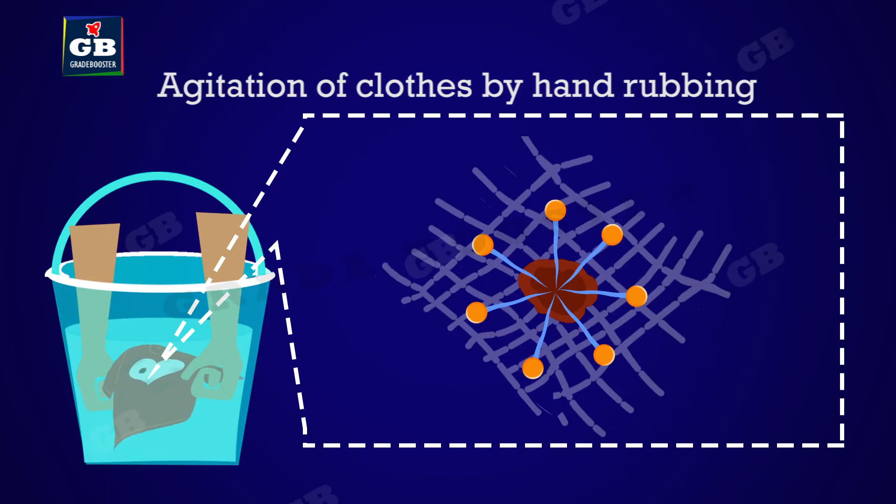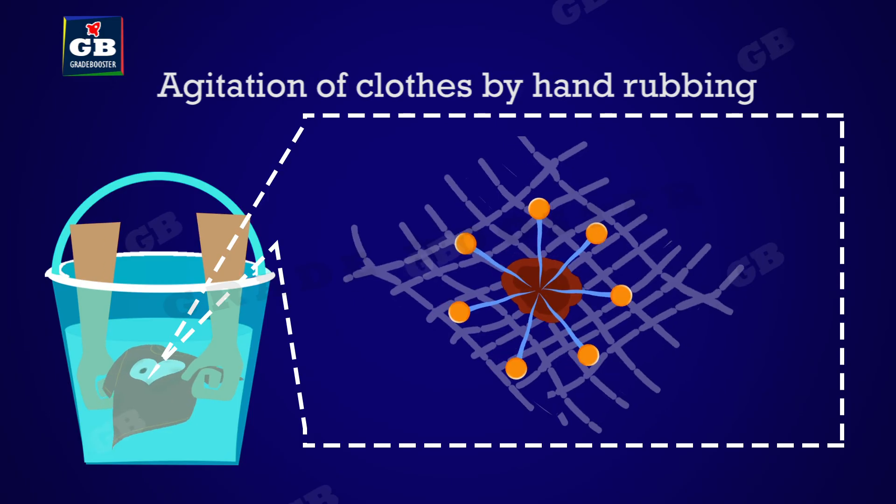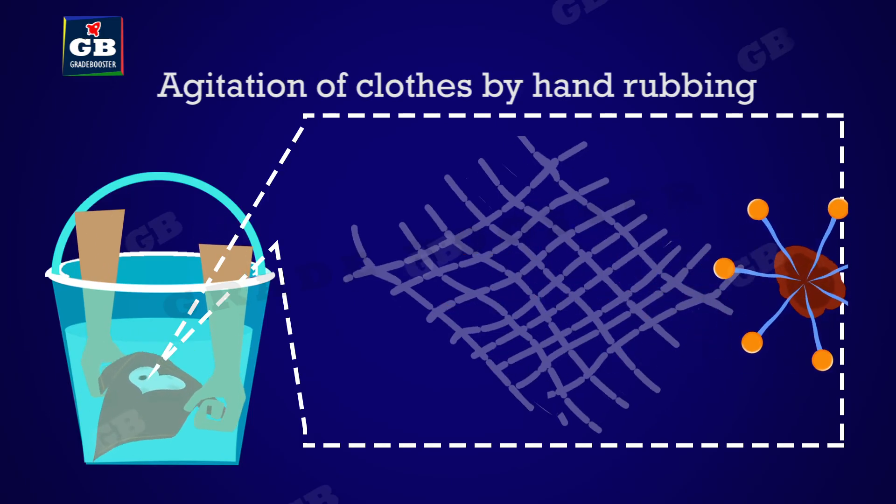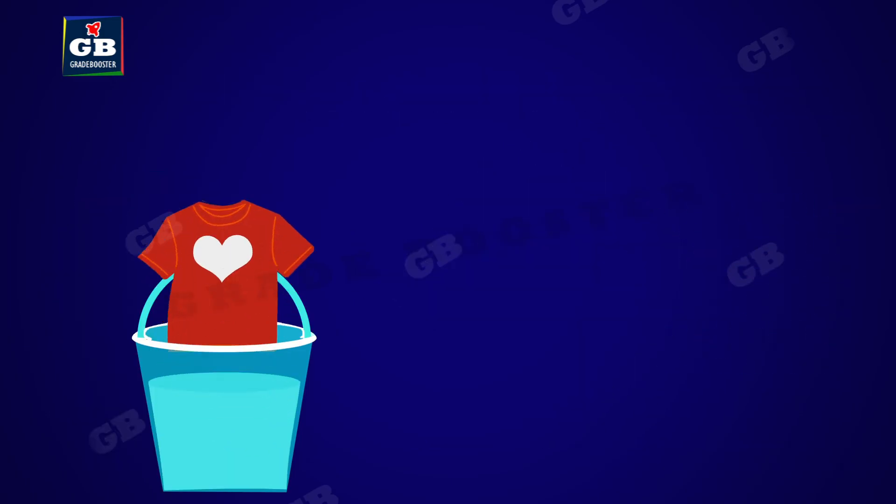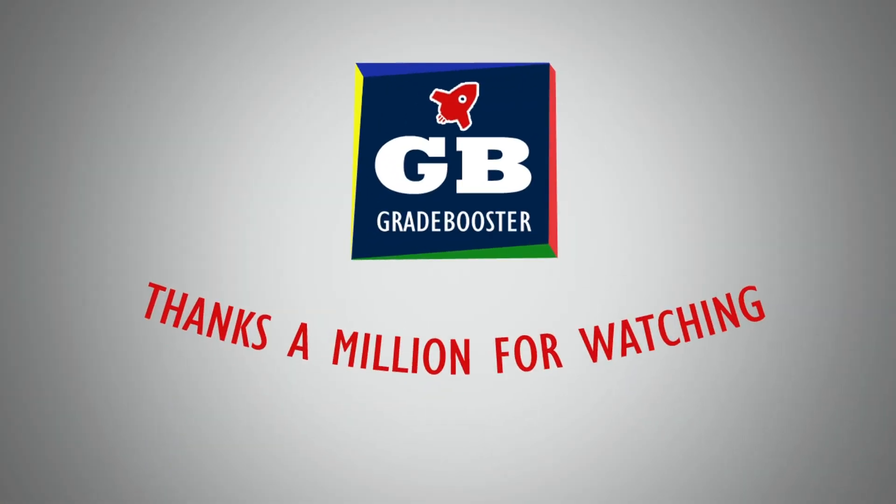Thus the cloths are agitated by hand wash or by machine so that oil or grease droplets along with dirt are squeezed out. This is how the soaps and detergents clean the dirt.